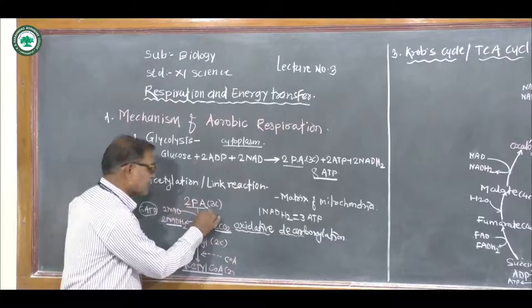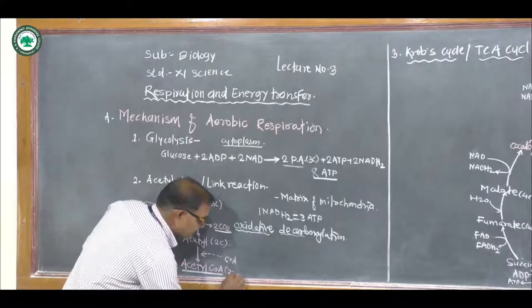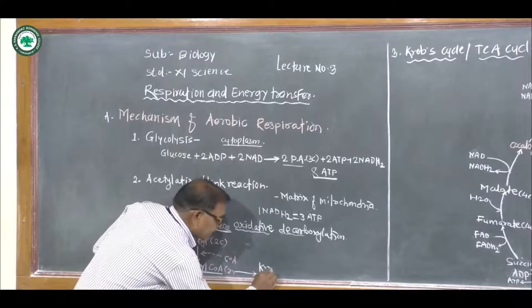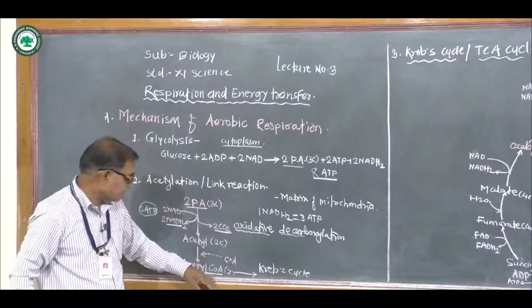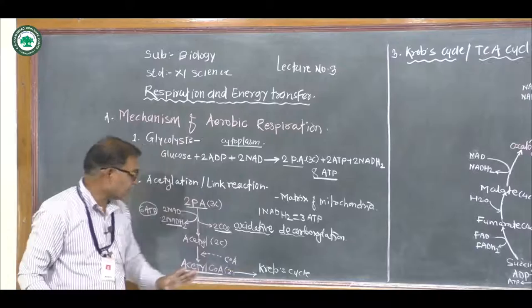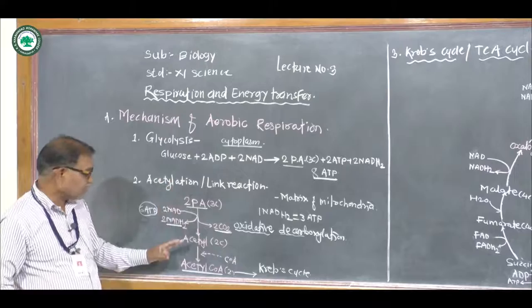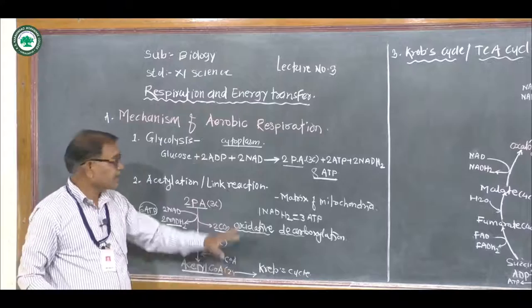Pyruvic acid does not directly enter the matrix of mitochondria; it is first broken down to form acetyl coenzyme A, which then enters the matrix of mitochondria. In the matrix, the Krebs cycle takes place. Therefore, acetyl coenzyme A is the link between glycolysis and the Krebs cycle, and this step is also called the link reaction.